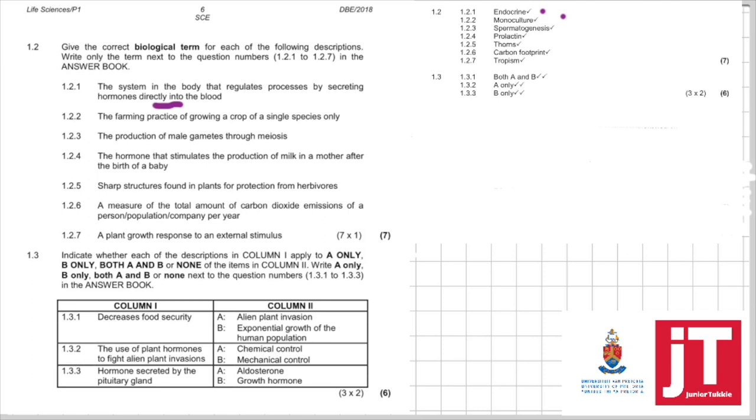1.2.3. The production of male gametes through meiosis. They told us specifically male gametes through meiosis. So your answer cannot be gametogenesis. Gametogenesis is too vague. They specifically said male gametes. So your answer has to be spermatogenesis. 1.2.4. The hormone that stimulates the production of milk in a mother after the birth of a baby. Production of milk in a mother after the birth of the baby, this hormone is called prolactin. 1.2.4 has come out in many past papers. Make sure you make a record of it. 1.2.5. Sharp structures found in plants for protection from herbivores. That's quite easy. Thorns.